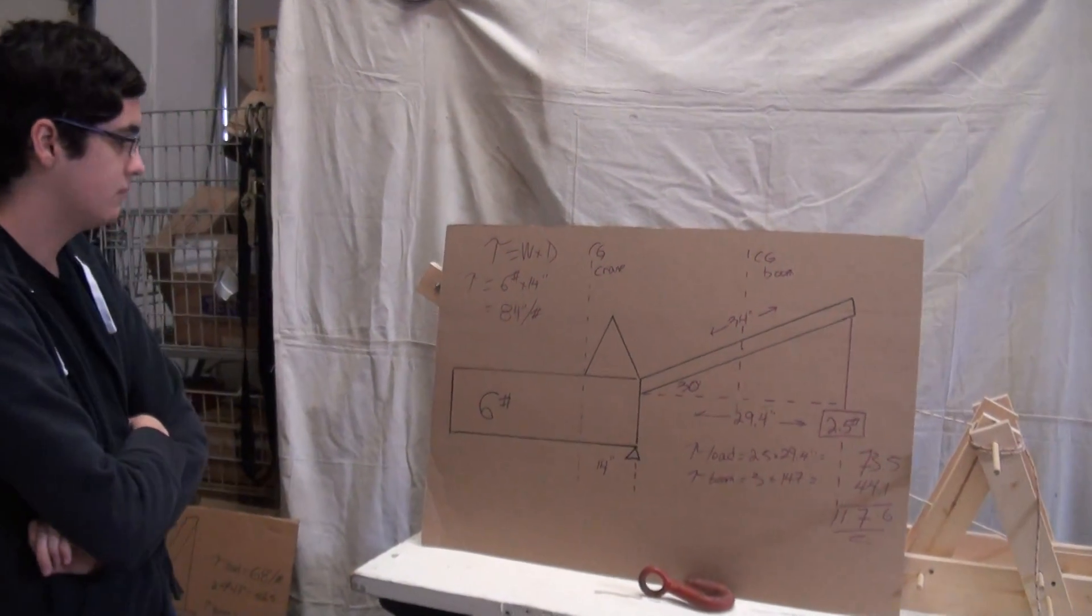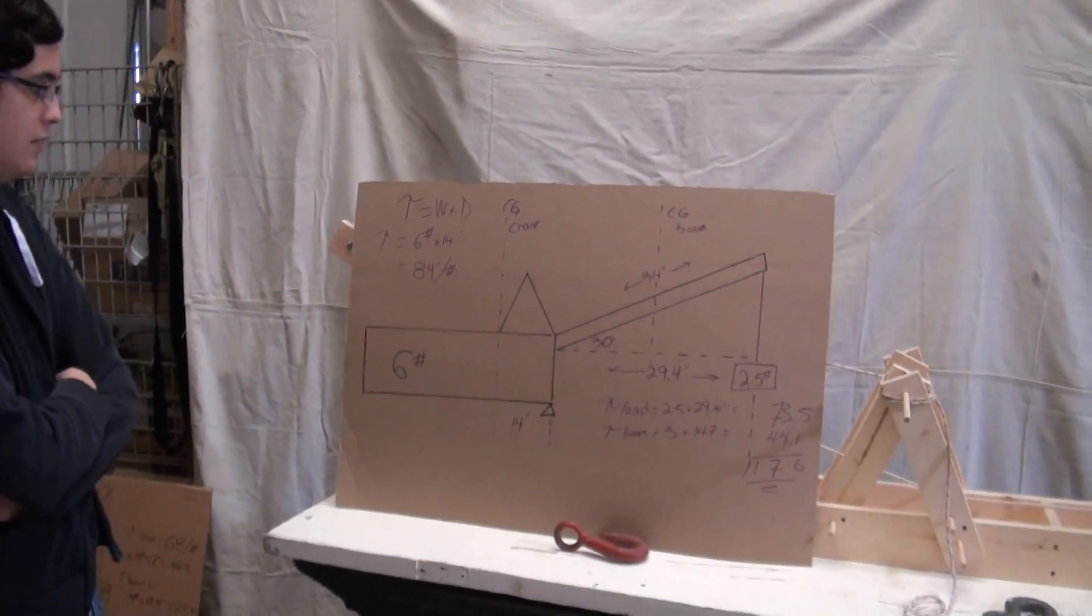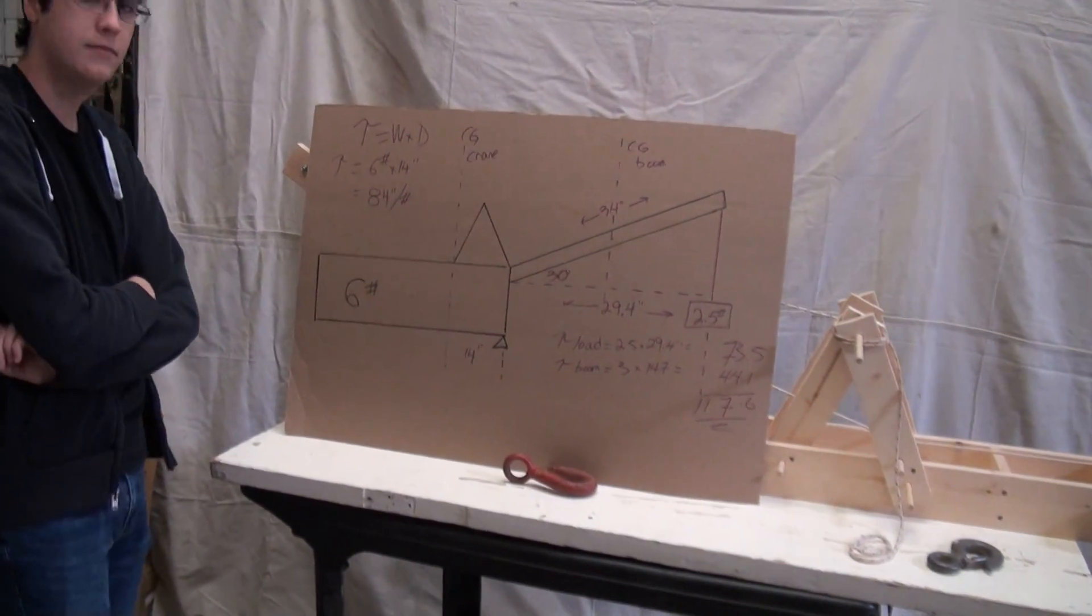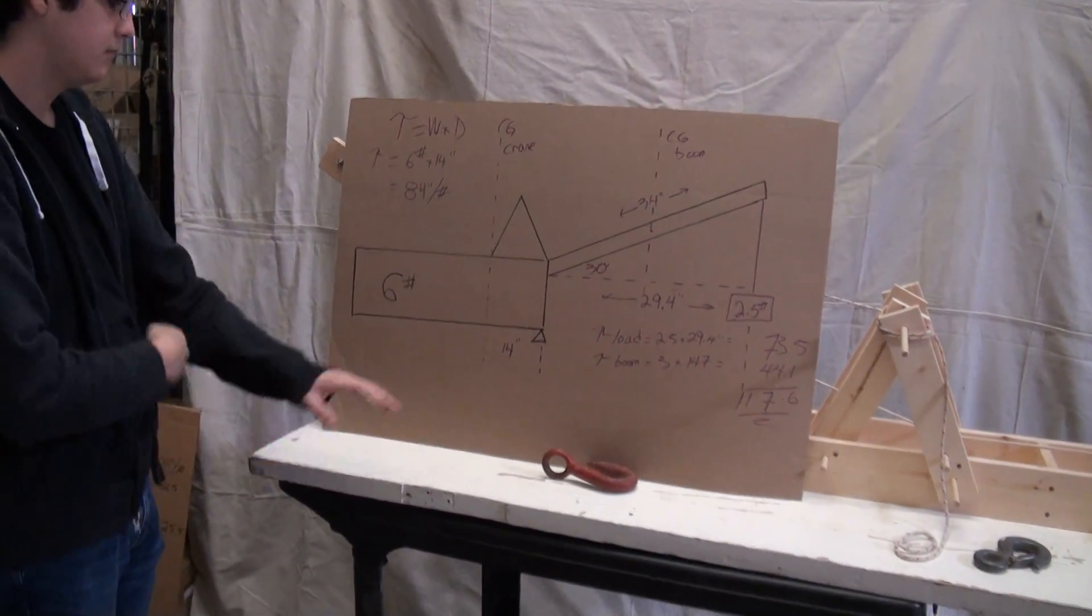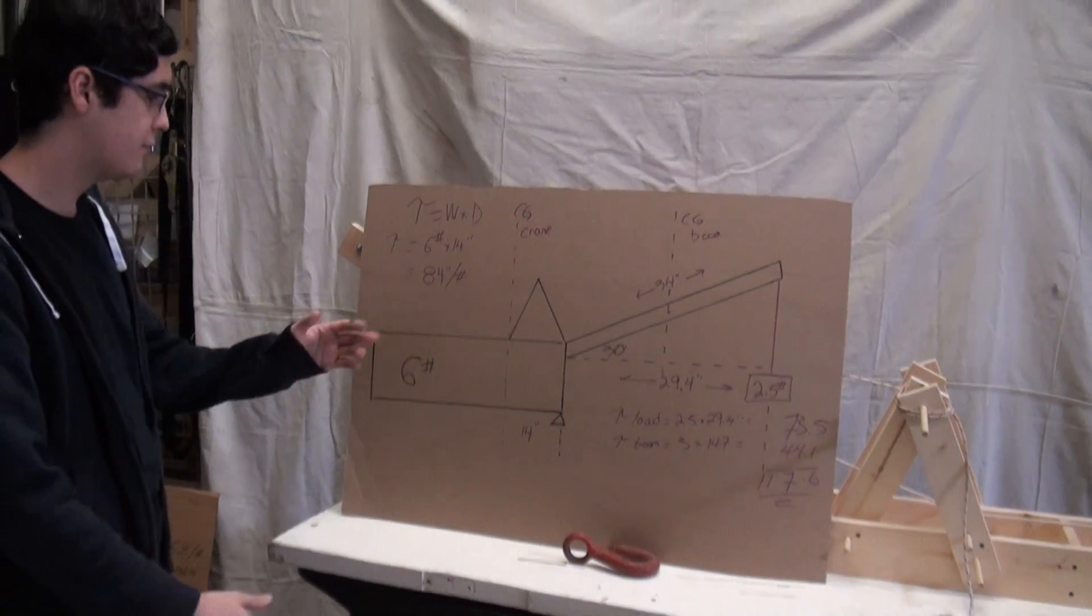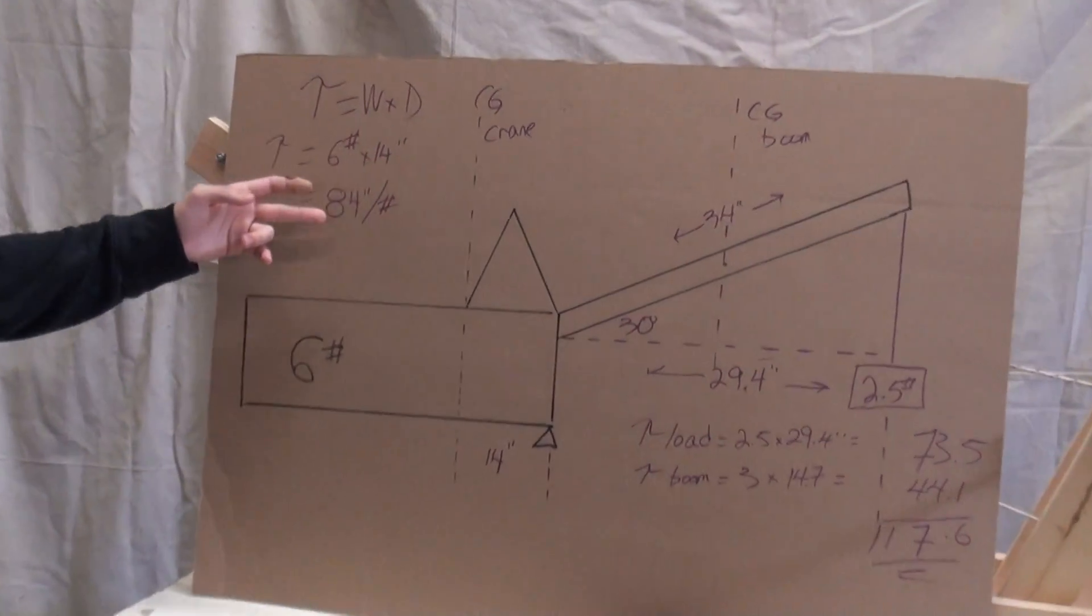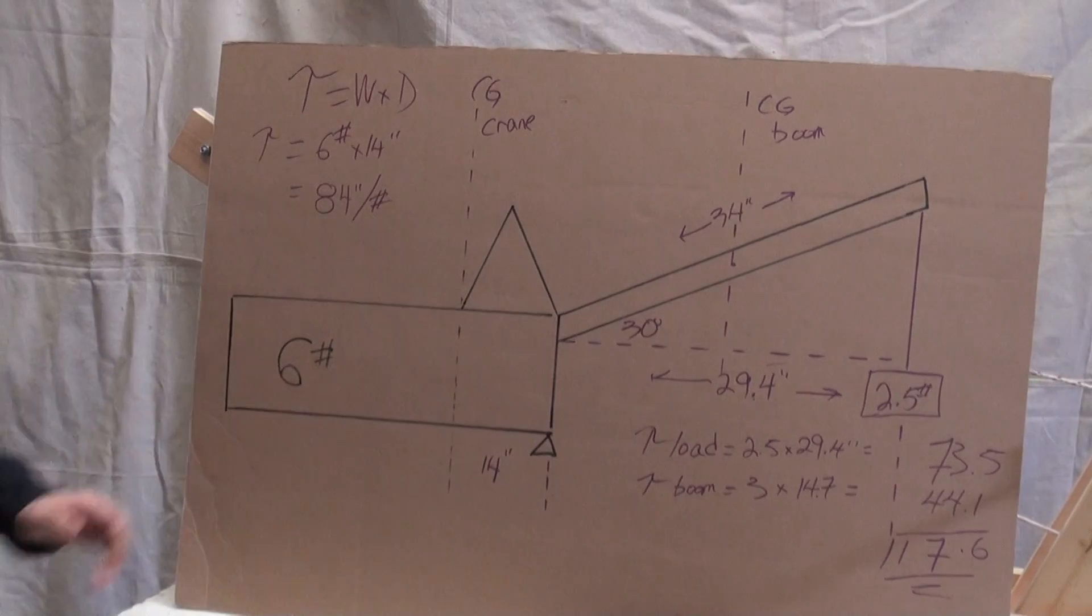Okay, so we know that the crane is going to tip over, now let's run the numbers. The crane body still weighs 6 pounds and it's still 14 inches away. Times those two together, 84 inch pounds of torque. Same thing as before.